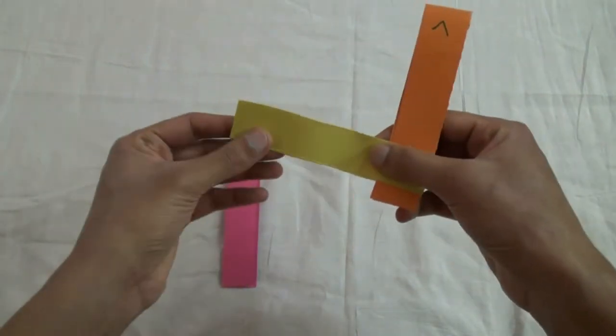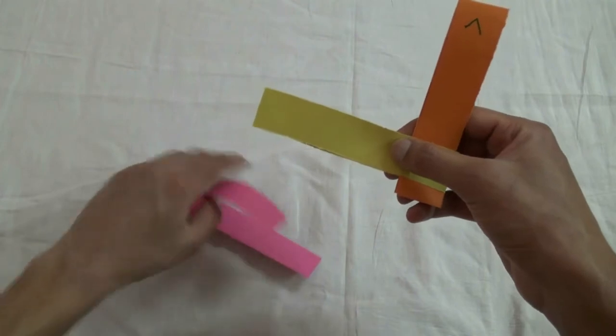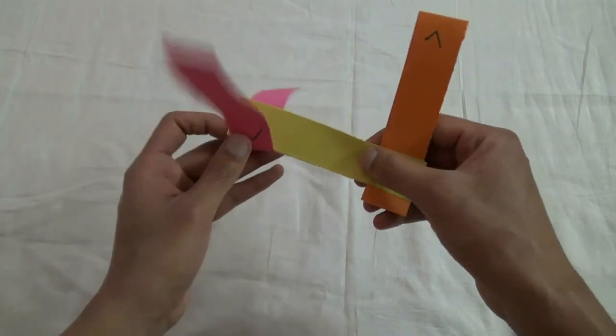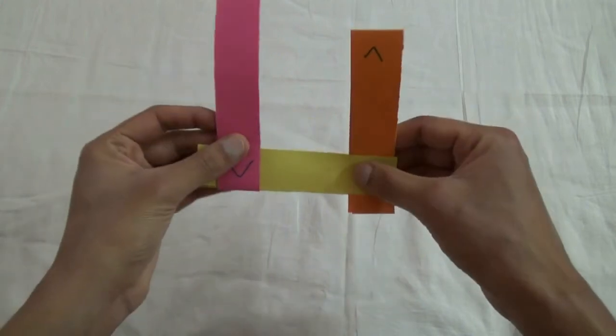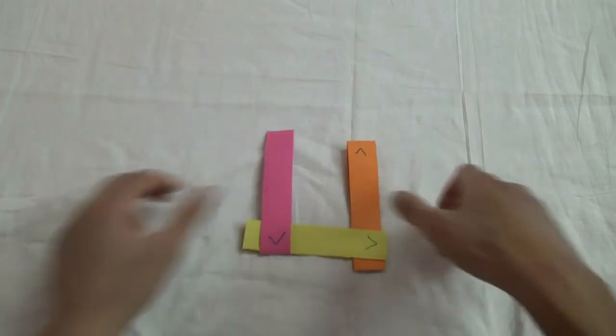Similarly, take the free end of the yellow strip and put it inside the folded end of the pink strip like this. So now you can see that you have formed a U shape structure out of the paper strips.